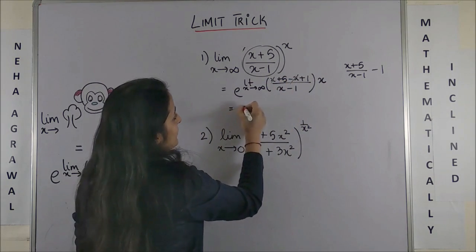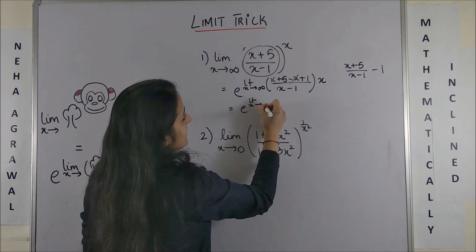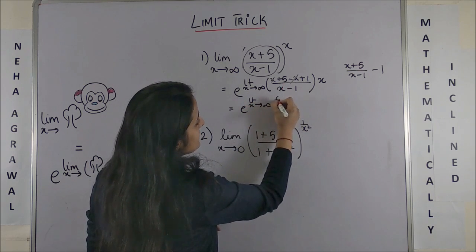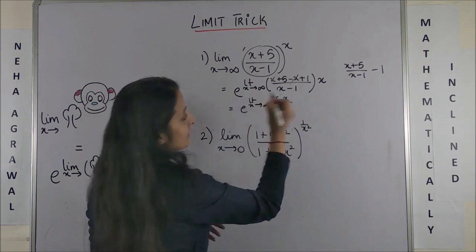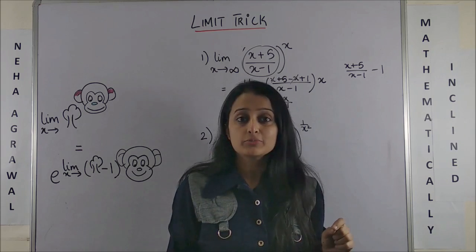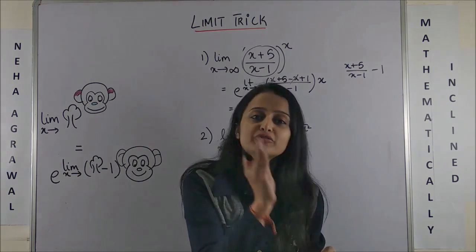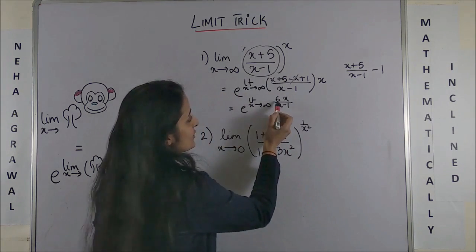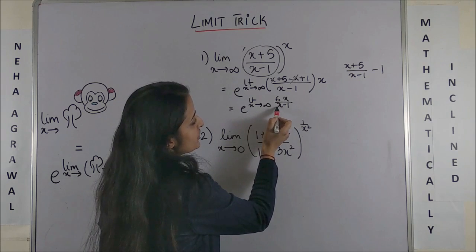The monkey comes down and comes here. All these steps you can do mentally. Here you have e raised to power limit extending to infinity, this would be 6x/(x-1). When you have the numerator and denominator to be of the same degree, then the coefficient gives us the answer. So the coefficient is 6 here, coefficient is 1 there, so it would be simply e to the power 6. That's it.